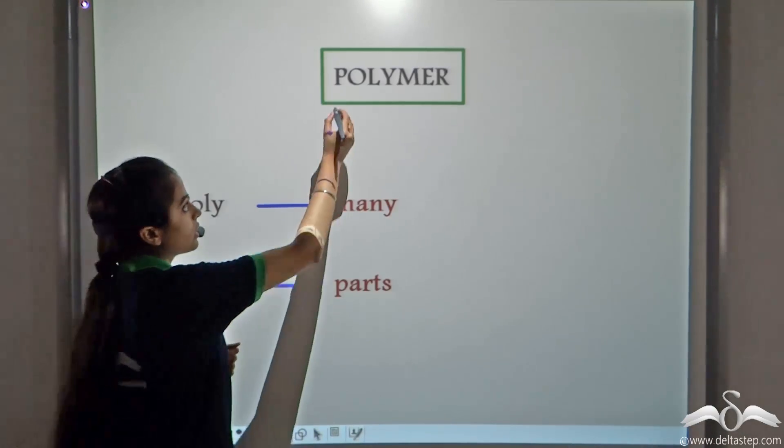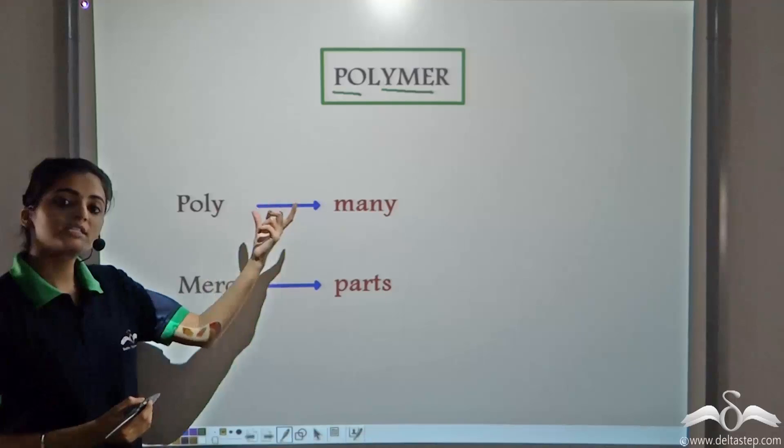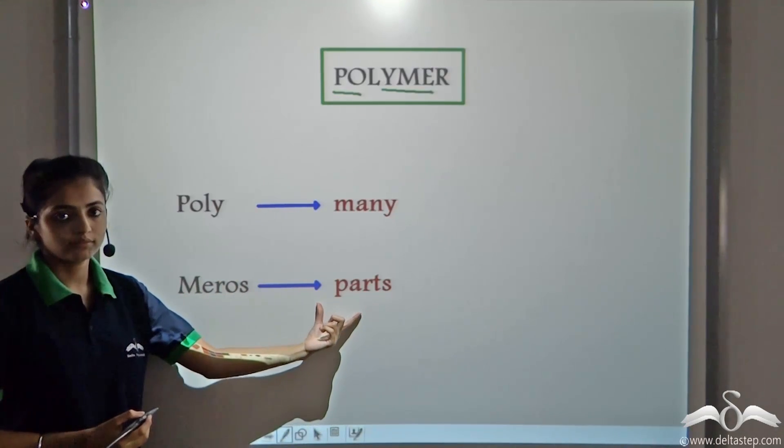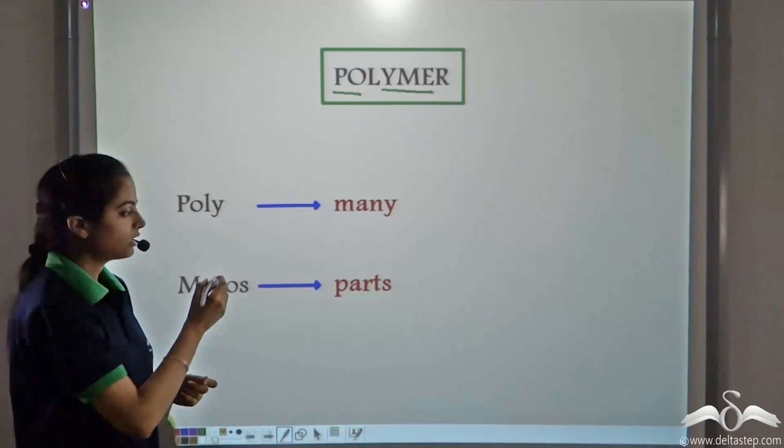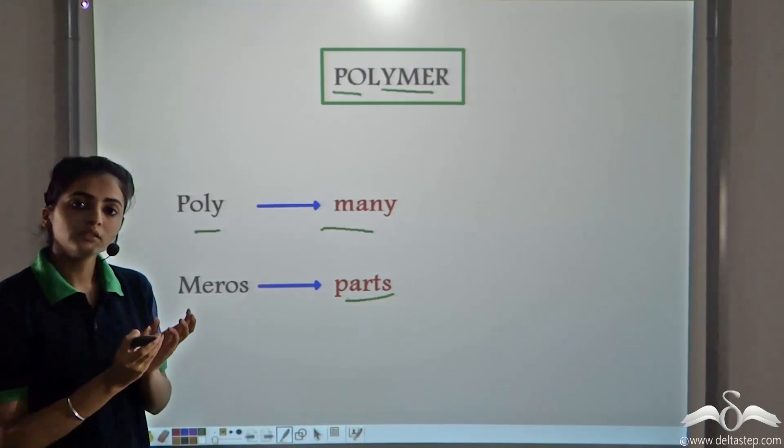Polymer comes from two words. Poly means many. And mers means parts. So polymer actually means...